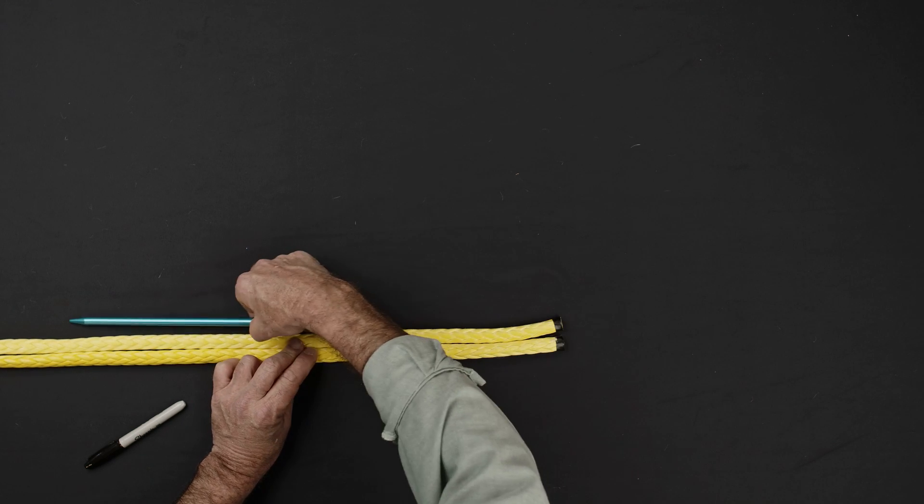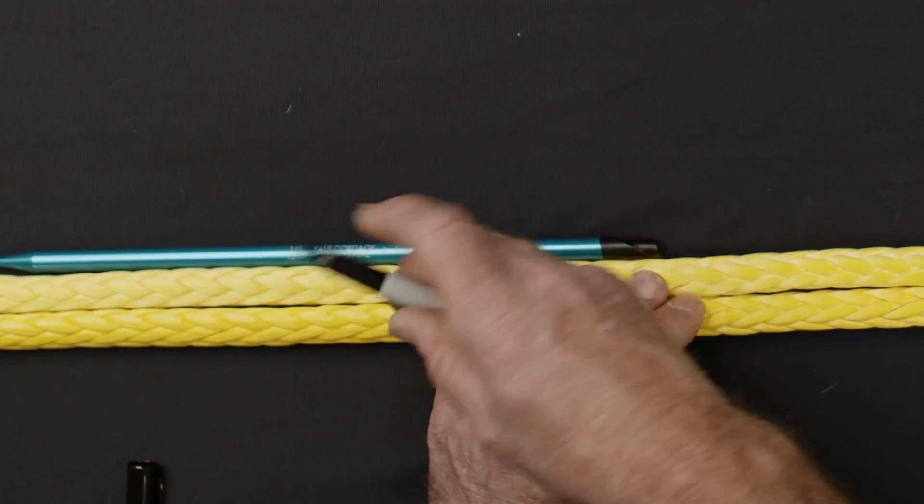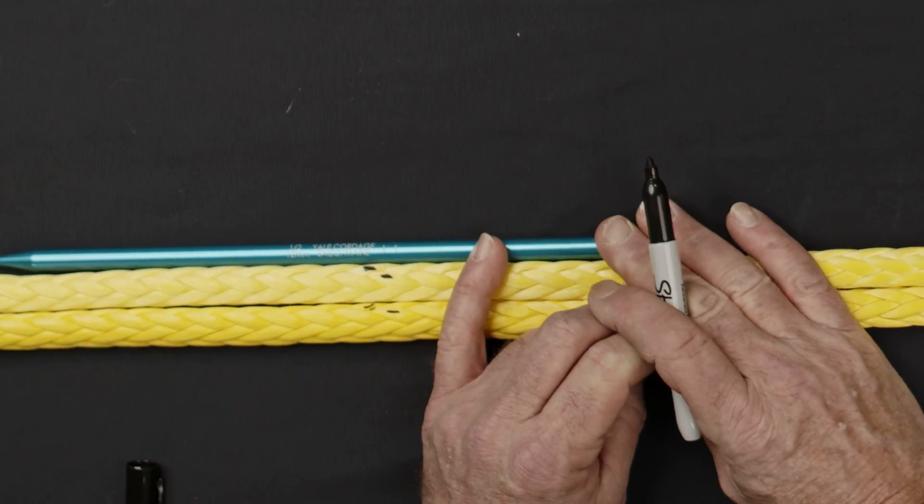From the end of the rope, mark adjacent strands at 1 and 1 short fit lengths. Continue forming your taper by marking the 4th strand pair as well as the single end at the 9th strand pair.